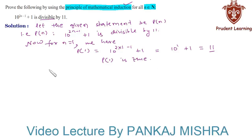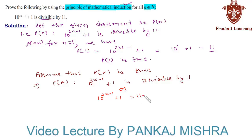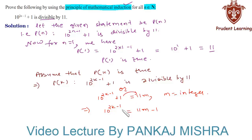In our second step, we assume that P(k) is true for some positive integer k. That is, 10 raised to the power (2k minus 1) plus 1 is divisible by 11, or equivalently, 10 to the power (2k minus 1) plus 1 equals 11m, where m is an integer. This gives us 10 to the power (2k minus 1) equals 11m minus 1. Let this be equation 1.